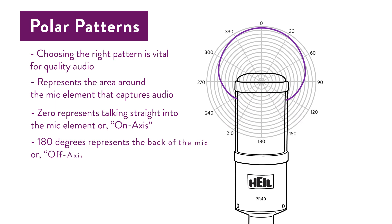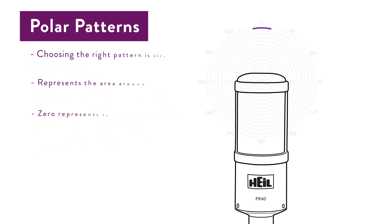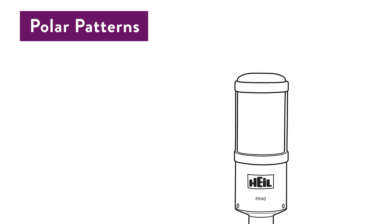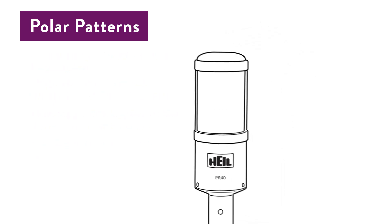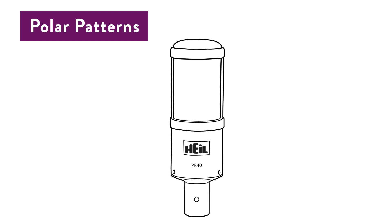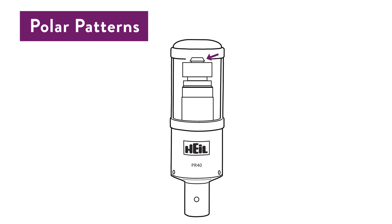So now you can see why it's important that you know where the microphone element is housed inside the body of the microphone. Let's look at an example. This is the PR40. The PR40 is an end fire element. If we could see through the PR40, it would look like this, and we could see that the element is way up close to the end grill. To understand polar pattern diagrams, we start at the end of the element.